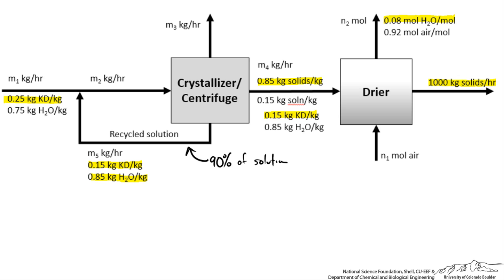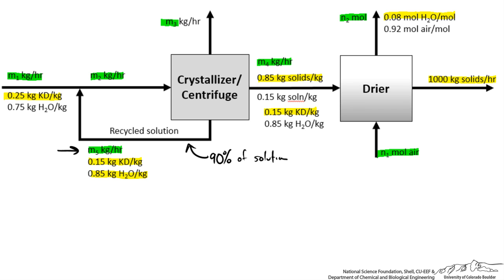Now we are going to label all our unknowns. We do not know the mass flow rate of our feed. We do not know the mass flow rate of our recycle stream, which is something we are looking for. We do not know the mass flow rate or the composition entering our crystallizer and centrifuge. We are looking for the amount of water being evaporated from our crystallizer and centrifuge. We also do not know the molar flow rates of air into the dryer or the total molar flow rate out.